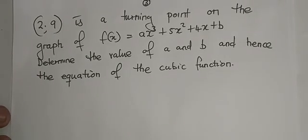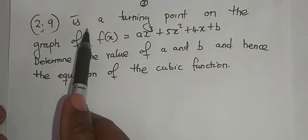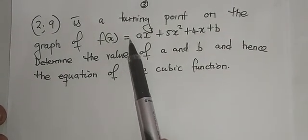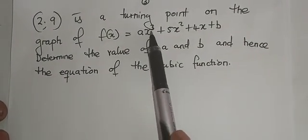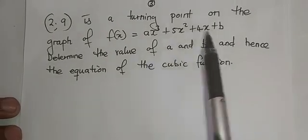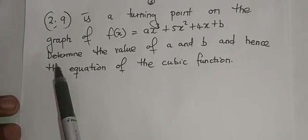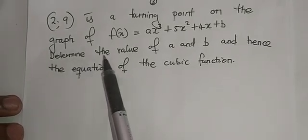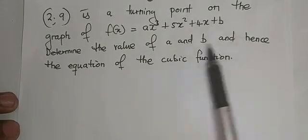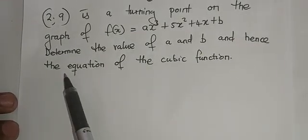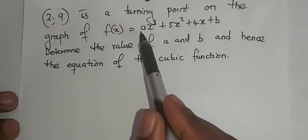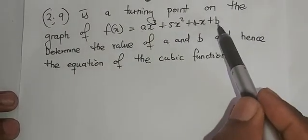Right here, we are given that (2,9) is a turning point on the graph of f(x) = ax³ + 5x² + 4x + b. All we want to do is determine the value of a and b, and we must also find the equation of the cubic function. So we need to find what's a and what's b.